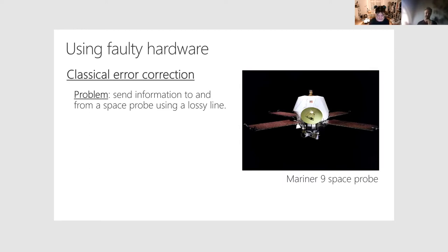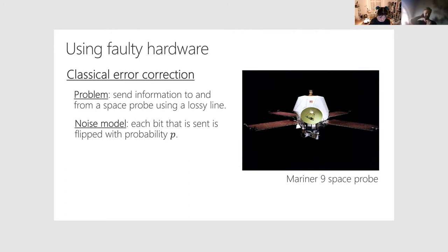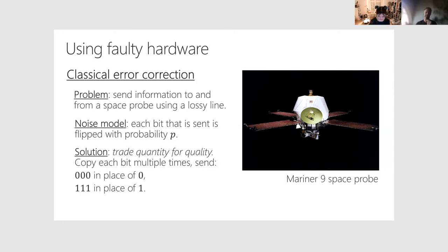Let's think about the non-quantum case first. You can imagine a scenario where information needs to be sent from one place to another, but there's some noise which causes it to be corrupted. For example, imagine a space probe — as it gets further from Earth, the signal becomes weaker. The probe sends ones and zeros encoding information, and each bit could be flipped with some probability p. A simple solution is: instead of sending a single bit for each bit of information, send a repeated set of bits — instead of sending zero, send 000; instead of one, send 111.